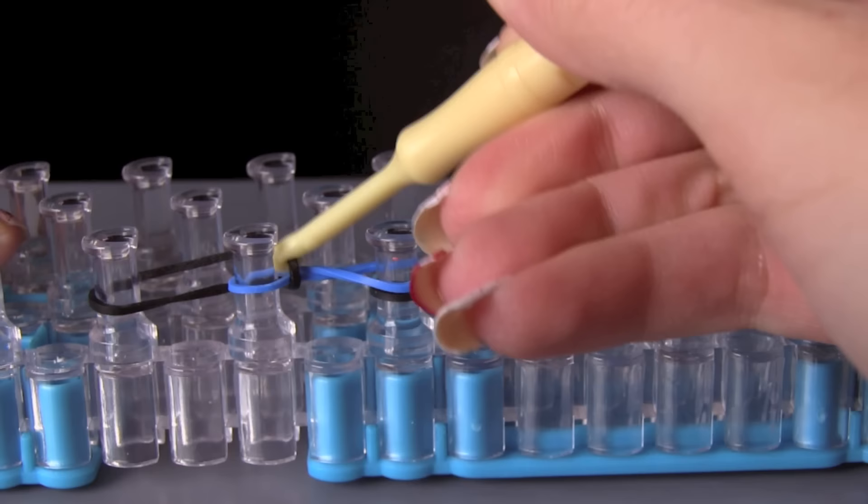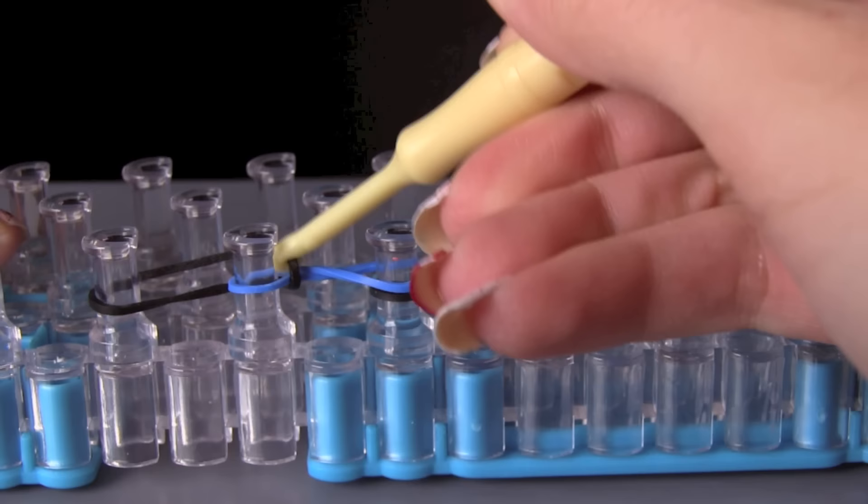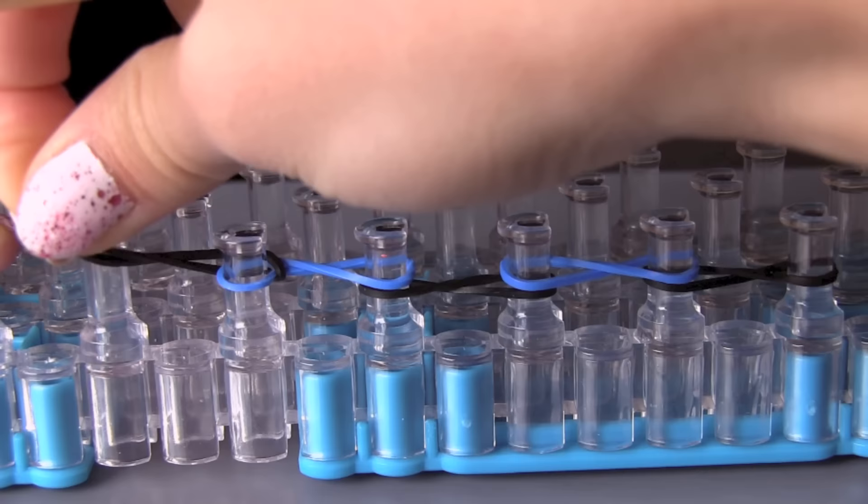Now I am taking my hook and I am going to grab the part of the black rubber band that is on the second pin. So it should be underneath the blue one but I am going to pull it with the hook so I have it on top of the blue one.